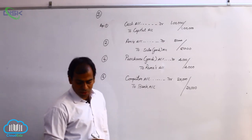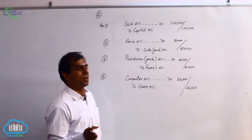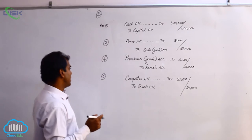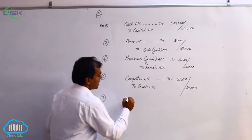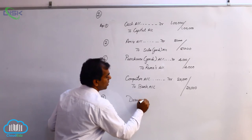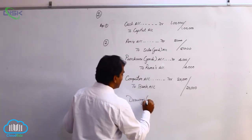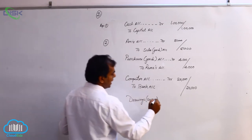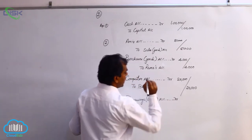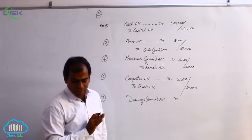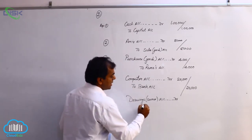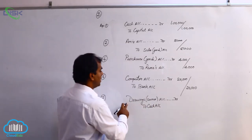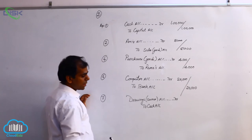The next transaction: Varun withdrew cash for personal use. Varun is the owner of the business. Whenever the owner withdraws anything for personal use, we refer to the owner with the word drawings. Since drawings is a personal account and the owner is the receiver, the personal account rule says debit the receiver — drawings account debit. The owner is taking cash from the business; cash is a real account, and credit what goes out, so we credit cash.